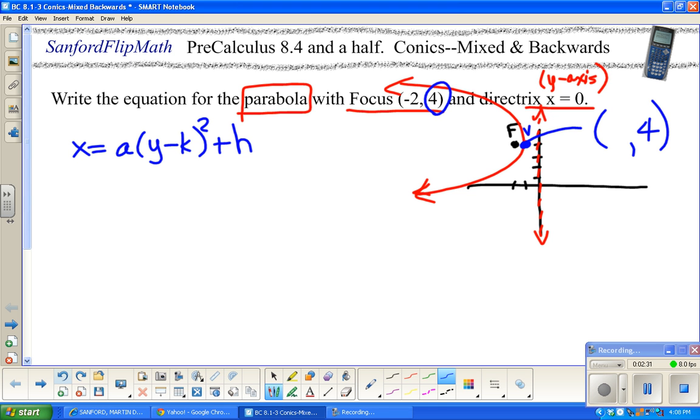The x value, remember the vertex is halfway between the focus and the directrix. I have an x value of 0 and an x value of negative 2. What number is halfway between them? One way to do this is do a quick little average, so negative 1. So as I write the equation, it's going to be a times y minus 4 squared plus h. Plus h is really plus negative 1, so I'm going to write minus 1.